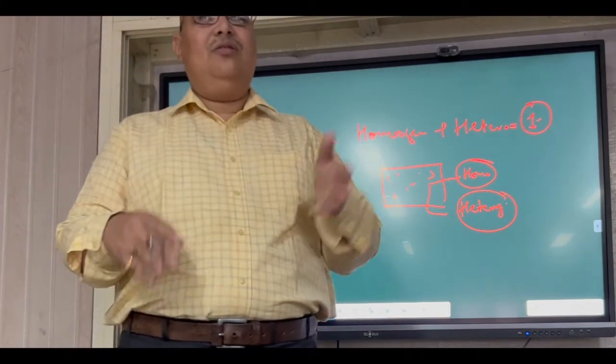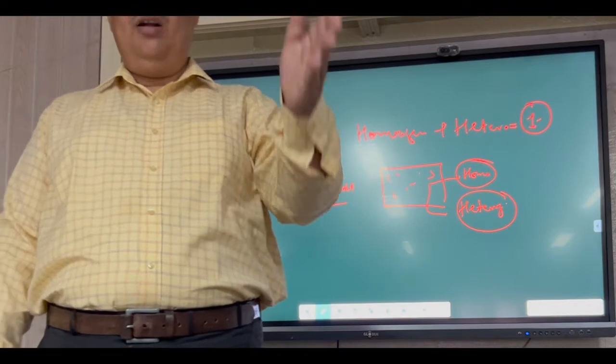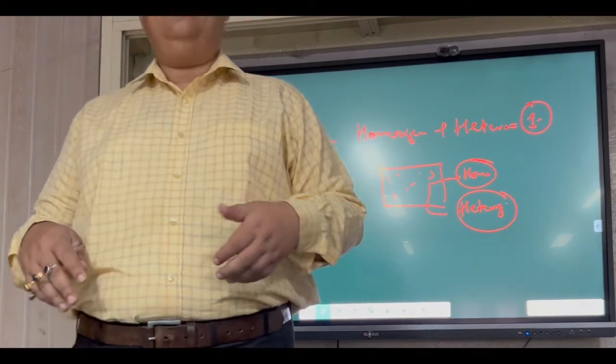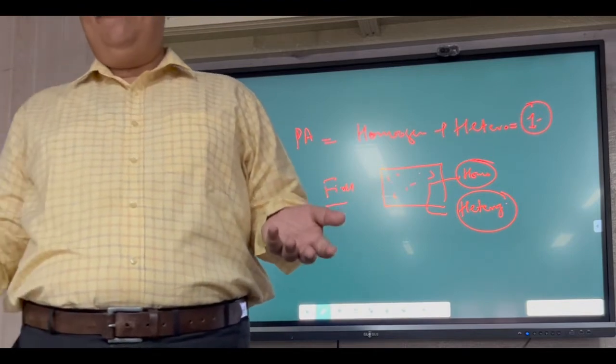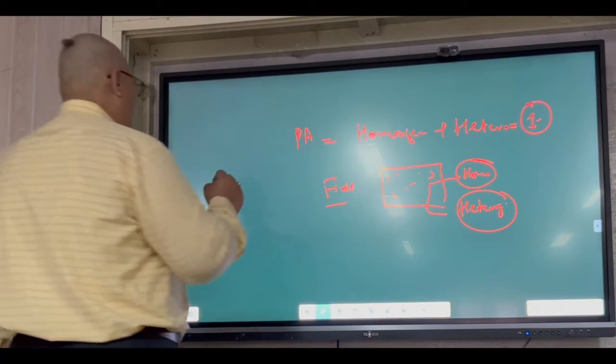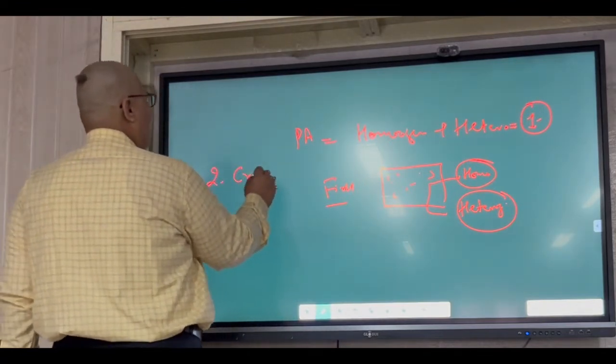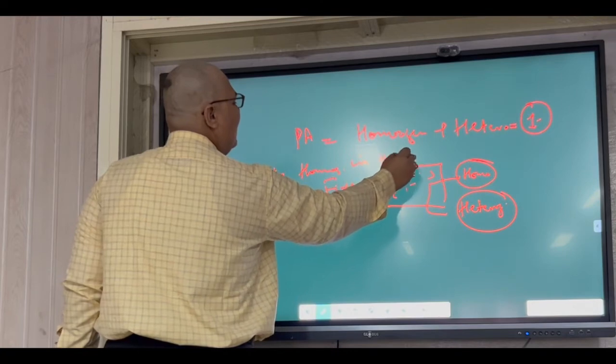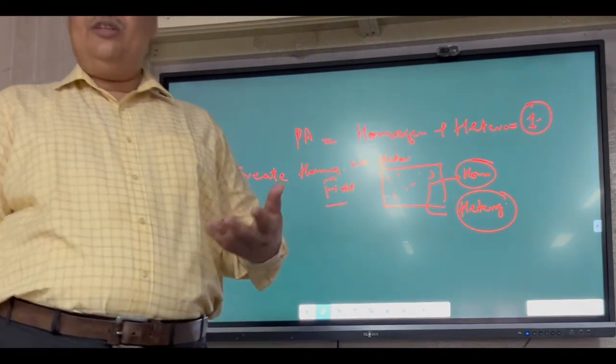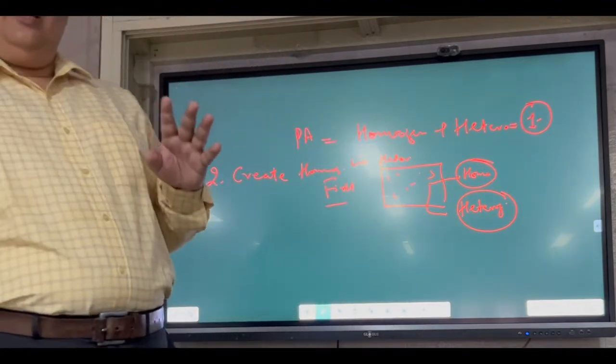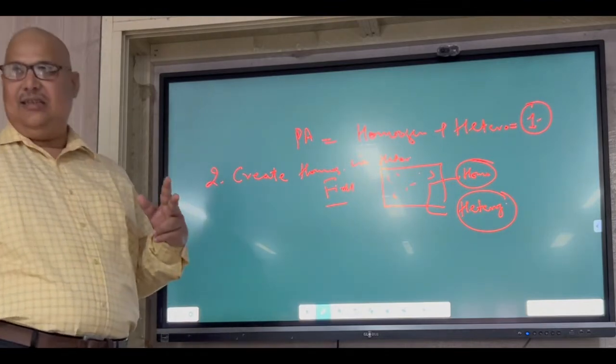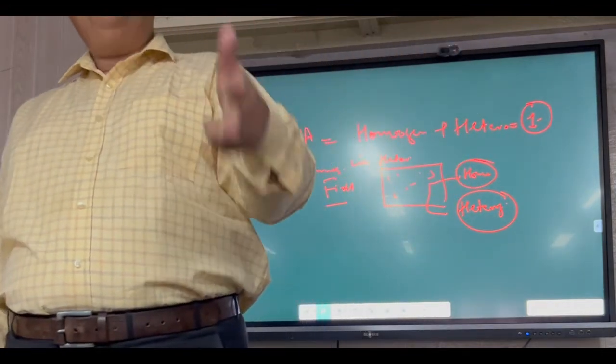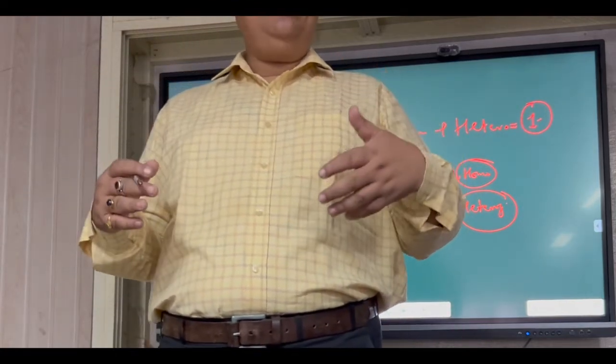Once you subtract heterogeneity from 1, what remains is homogeneity. And provide equal opportunity to each plant or each crop or each place is the main motto of precision agriculture. So the second definition is create homogeneity within the heterogeneity. This is for basic understanding of what is precision agriculture.